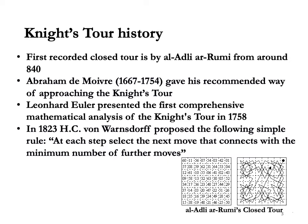In 1823, Warnsdorf proposed the following simple rule: at each step, select the next square that connects with the minimum number of further moves. This rule has proved incredibly effective in finding solutions for open knight's tours. It was only in the 1980s that a few carefully constructed examples showed that the rule can fail if the wrong move is made in the case of some ties. The method proved equally successful on larger boards.